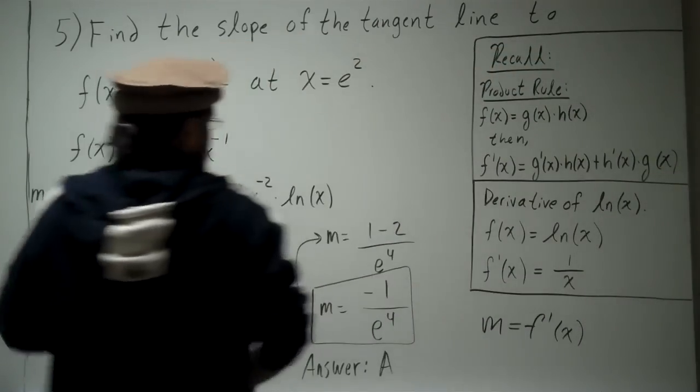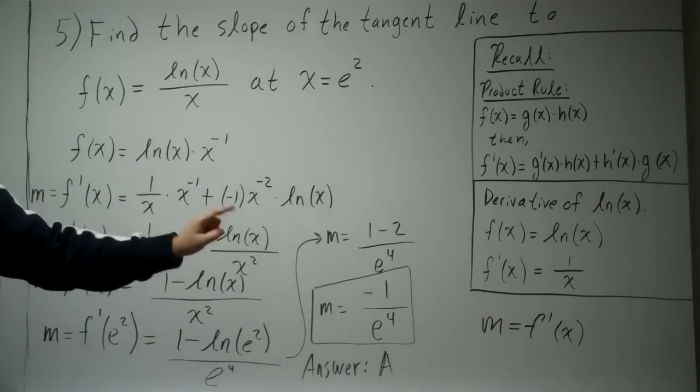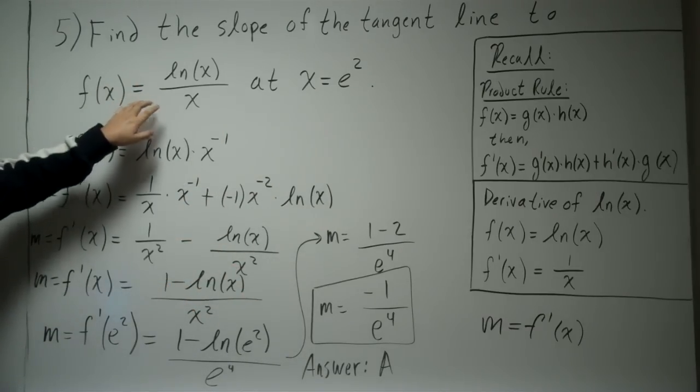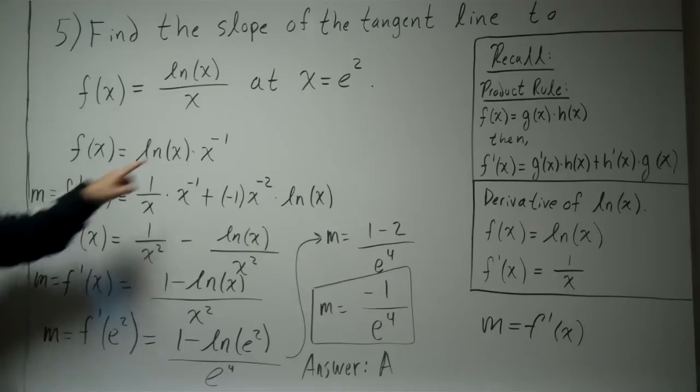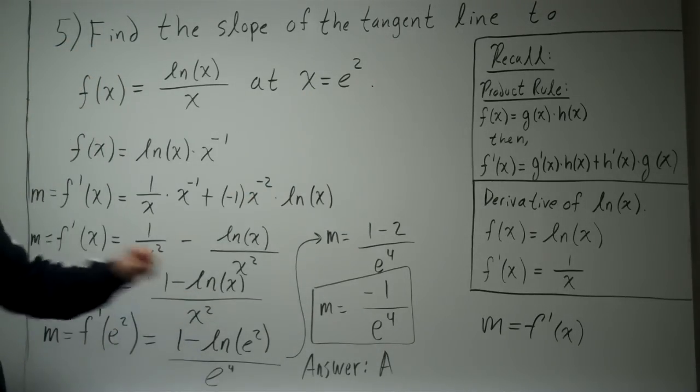And I believe that's answer A on the test. All right? So important things, recall product rule, the derivative of ln(x), and recall that the slope m is actually f prime. So all you have to do is take the derivative of your function, you obtain m, plug in e squared at the end, like we did here, and we obtain the answer.